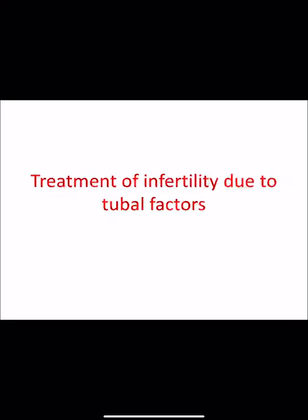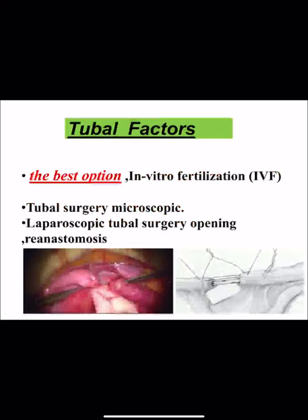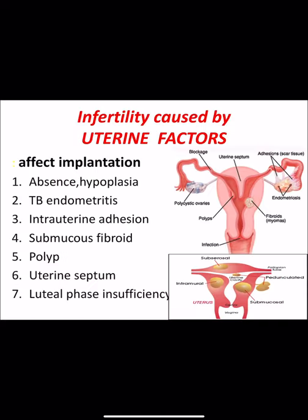If infertility is due to tubal factor, treatment options include: the best option, in vitro fertilization (IVF); or tubal surgery — either microscopic abdominal tubal surgery (re-anastomosis or opening of the tube) or laparoscopic tubal surgery (salpingostomy, re-anastomosis, or adhesiolysis). All surgical options have a low success rate.